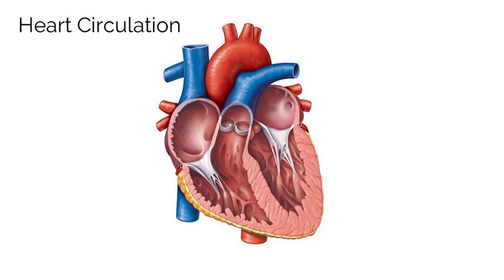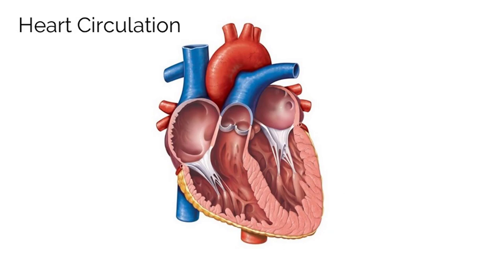One other important note: the left ventricle is much thicker and stronger than the right ventricle. This is because the left ventricle has to generate enough pressure to move blood throughout the entire body, whereas the right ventricle only needs to generate enough pressure to push blood to the lungs.